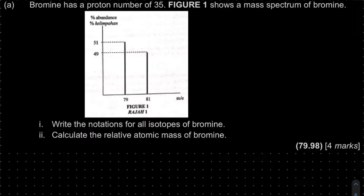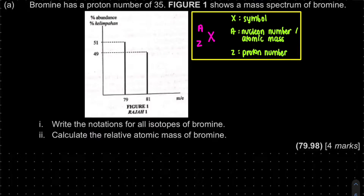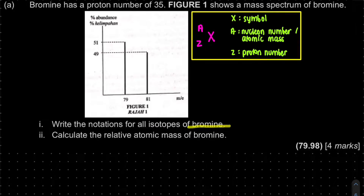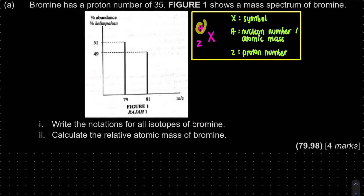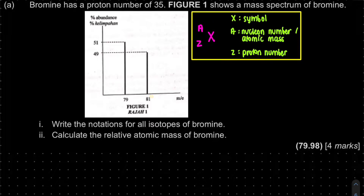For your isotopic notation, what you need is the atom's symbol. For bromine, the symbol is Br. For example, chlorine's symbol is Cl. A is your nucleon number, atomic mass, or isotopic mass — obtained from the x-axis of the figure. Z is your proton number, which is given in the question itself.